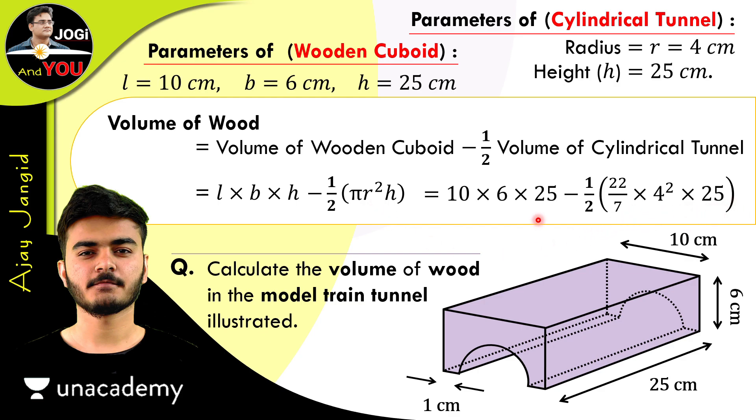Now you will understand why we took h equals 25 for the cuboid. Because h of the formula is here, and h of the height is here. So for avoiding confusion and mistakes, we took these measurements like this.